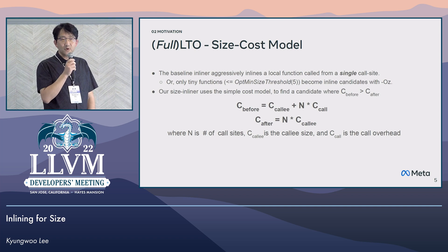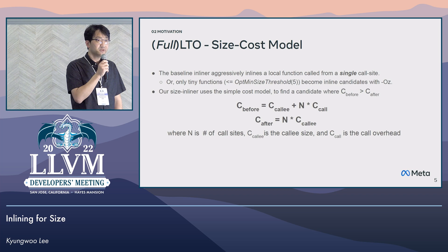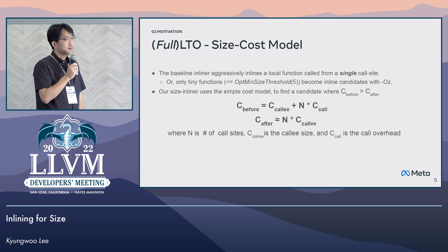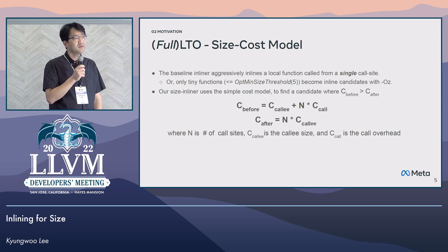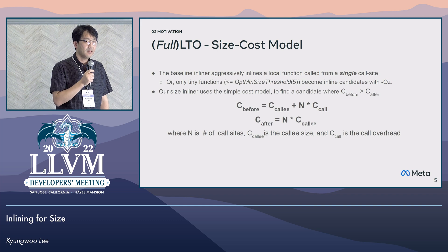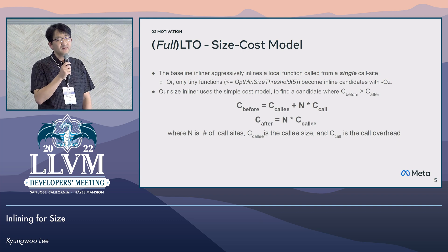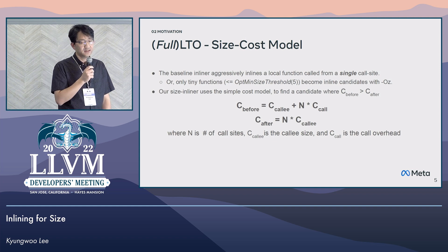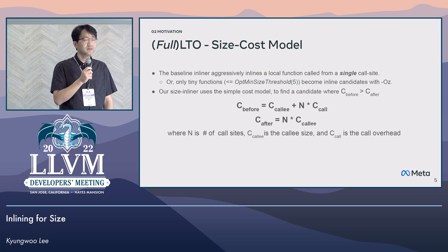My question is: is that optimal to reduce binary size? To answer this, I came up with a simple cost model. Basically, we consider two costs: before and after inlining. Before inlining, we consider the size of the callee plus the call overhead times number of call sites N. The cost after inlining eliminates the entire call overhead, but we still need to clone the body of the callee N times. So inlining is beneficial if the size after inlining is expected to be smaller than the size before inlining.